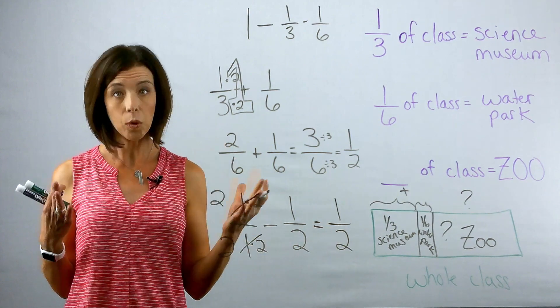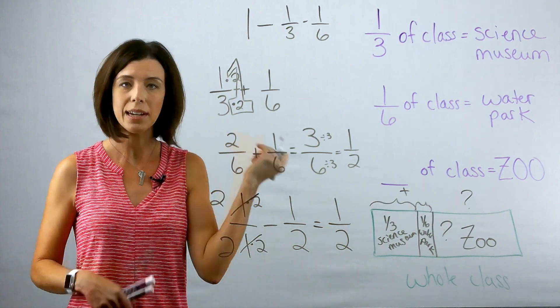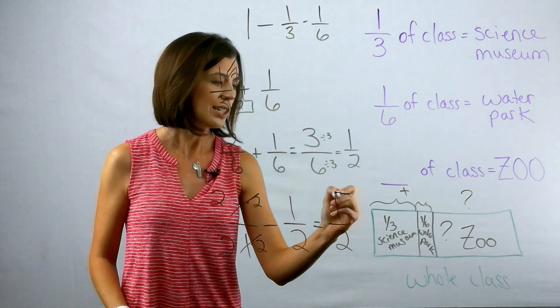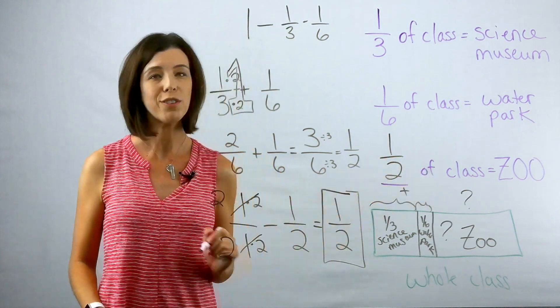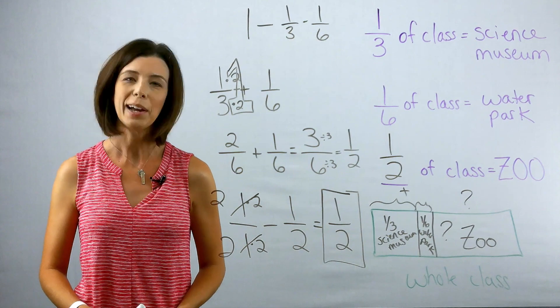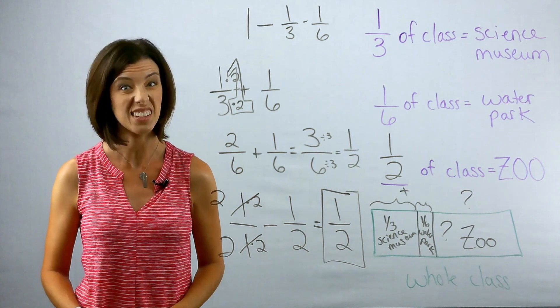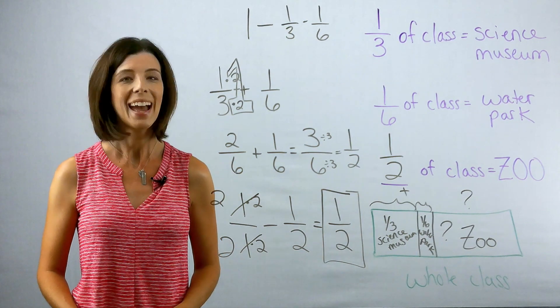And if you think about that, a whole candy bar, you break it in half and take away half, you still have a half left. So what fraction of the class voted for the zoo? One-half. I hope you found this video helpful and less overwhelming for this problem. Have a great day.